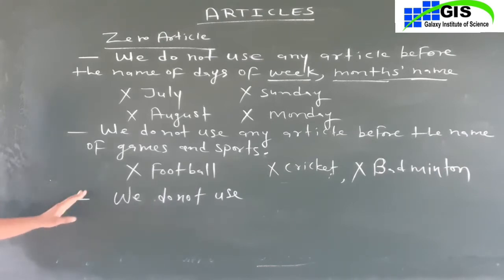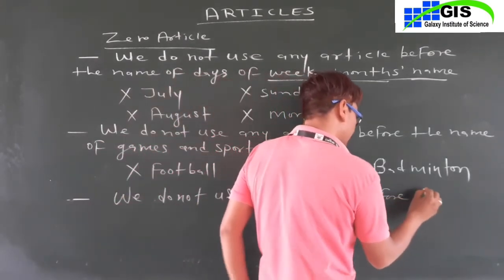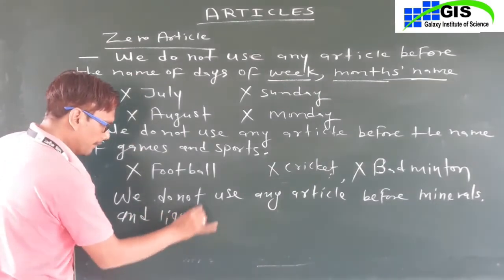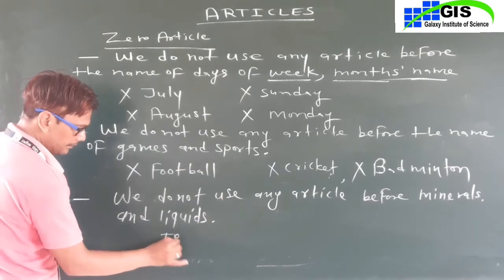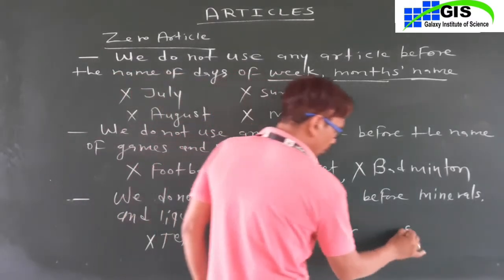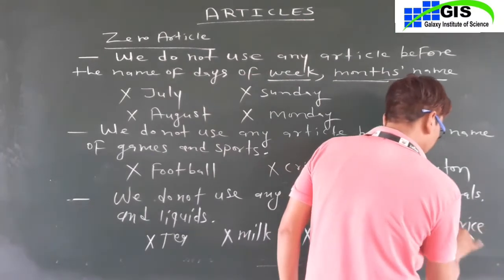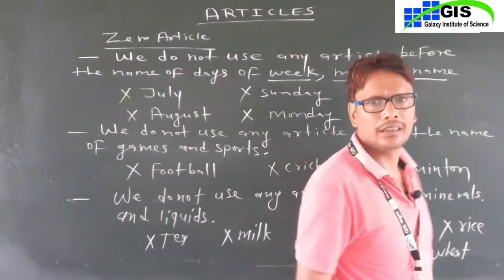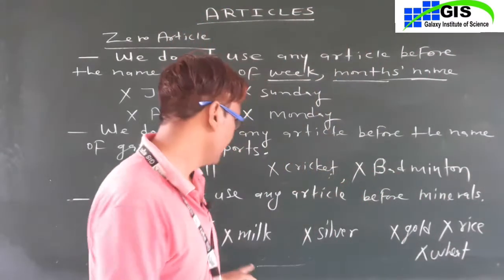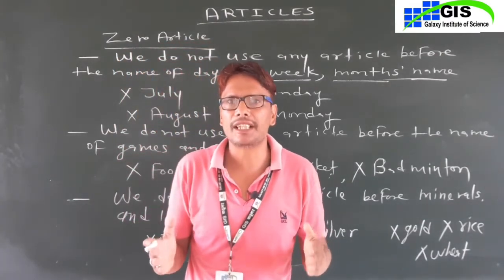We do not use any article before minerals and liquids — for example, tea, milk, silver, gold, rice, wheat. We never use any article before these. But my dear students, if there is a specific context, for example: 'Gold is a precious metal' — no article. But if I say 'The gold in your ring is very beautiful,' then we use 'the' for specificity.